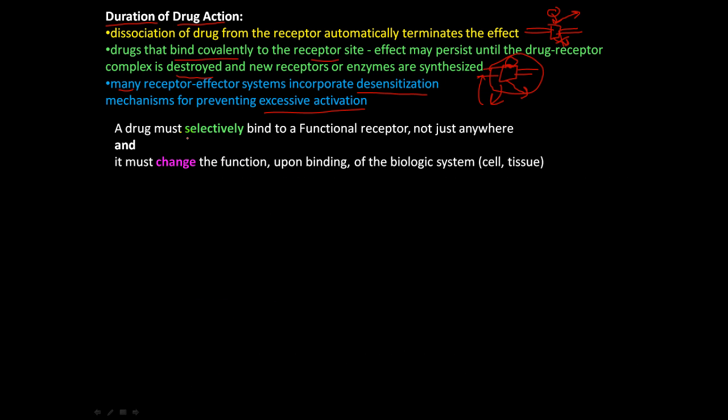So a drug must selectively bind to a functional receptor. It has to go through some pathways and it has to find the right receptor that it goes to and it must selectively bind to that functional receptor. It just can't bind anywhere in the body for it to be effective. And it must change the function either by inhibiting the pathway or by exacerbating or turning it on.